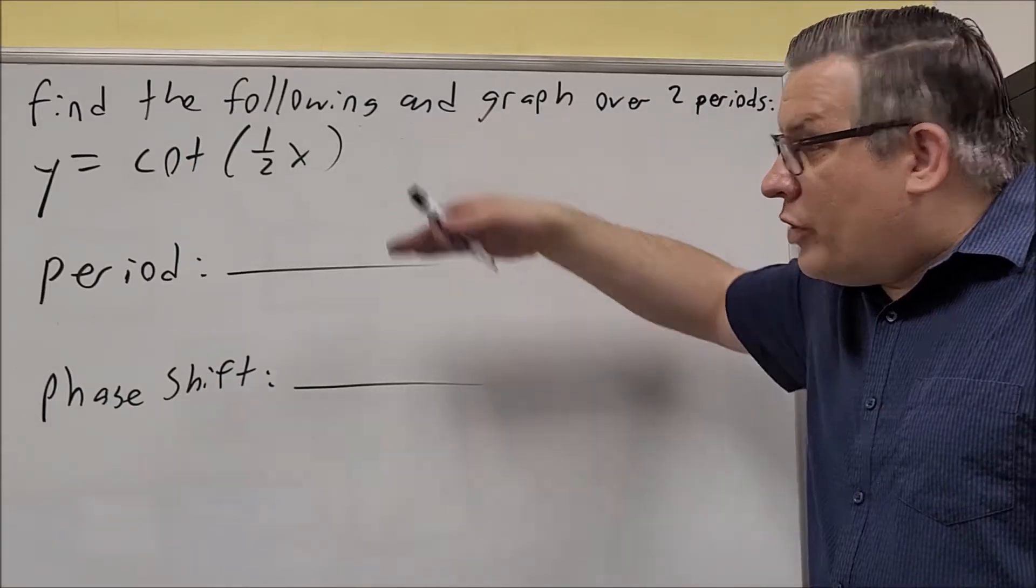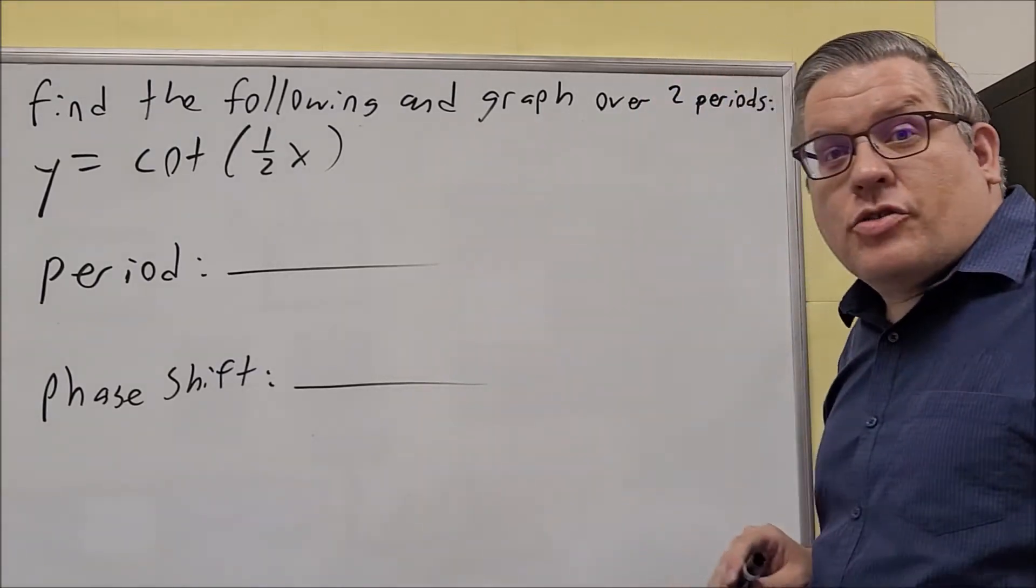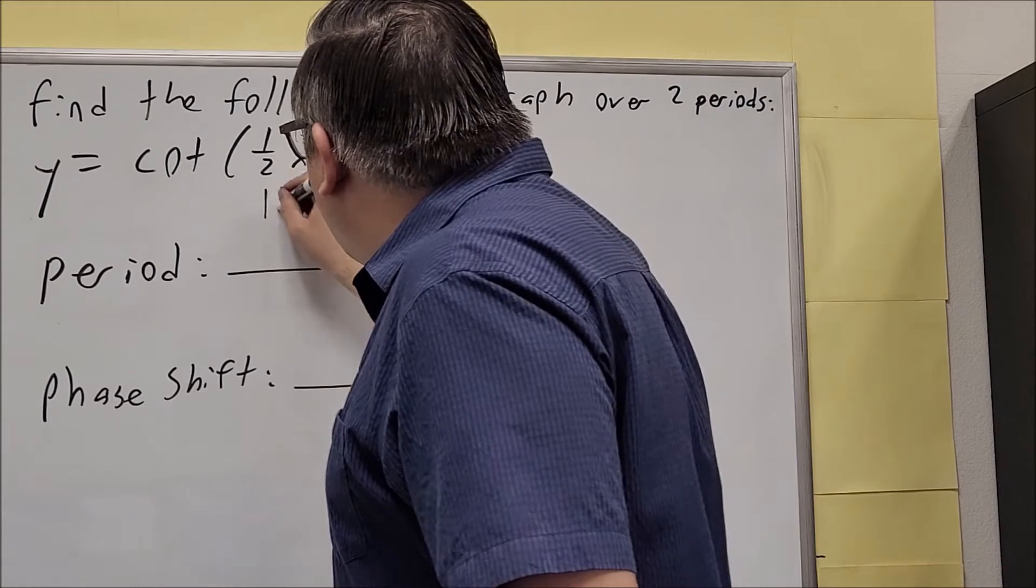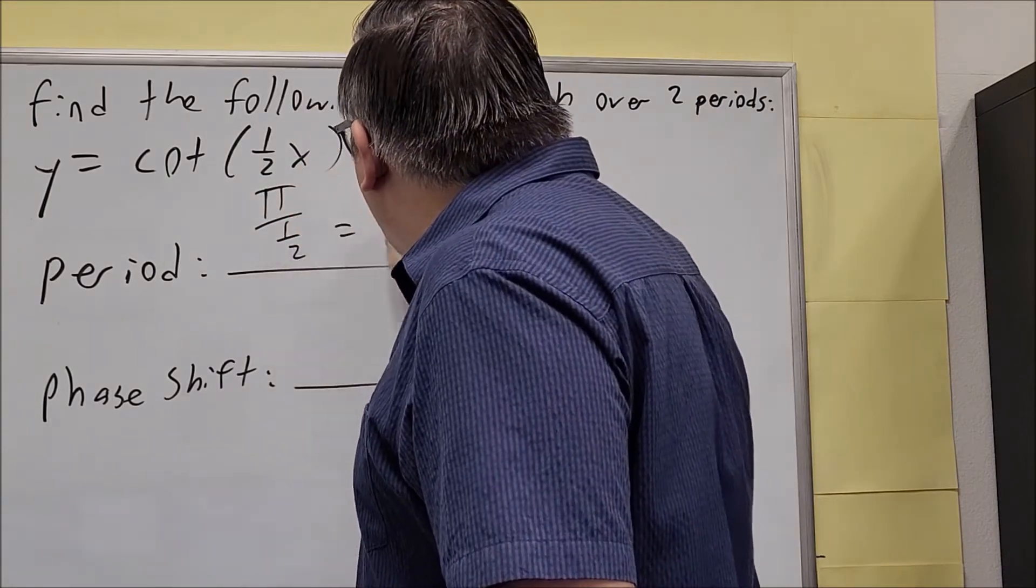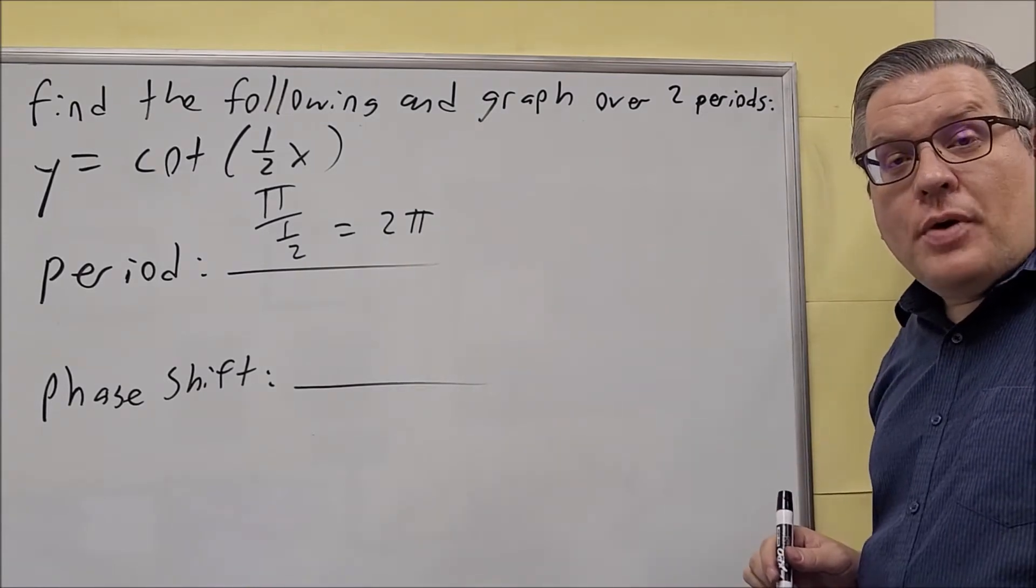In this next one we have a period and phase shift we want to find. It's a cotangent graph, so period is still going to be π over b. So we're going to do π over the number in front of the x, and that's going to flip and give you 2π.